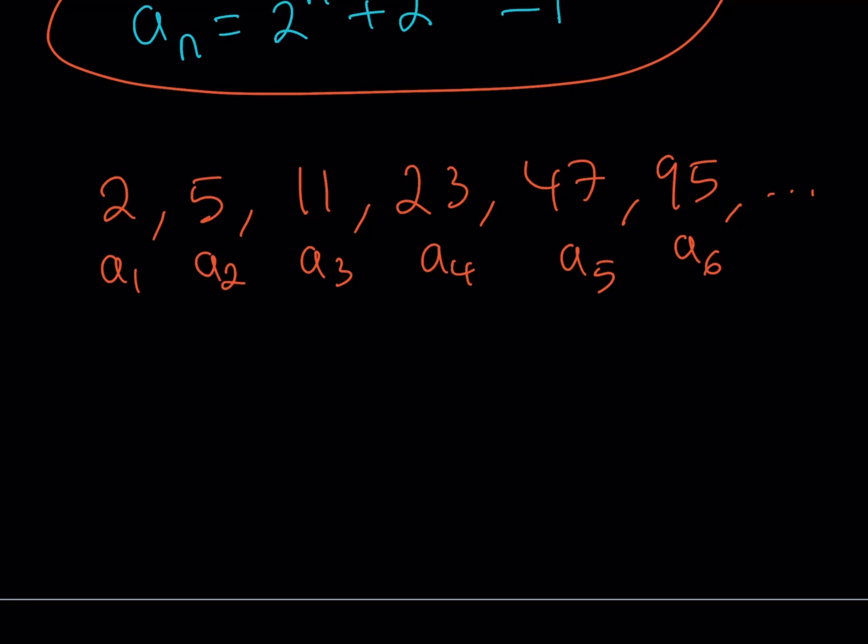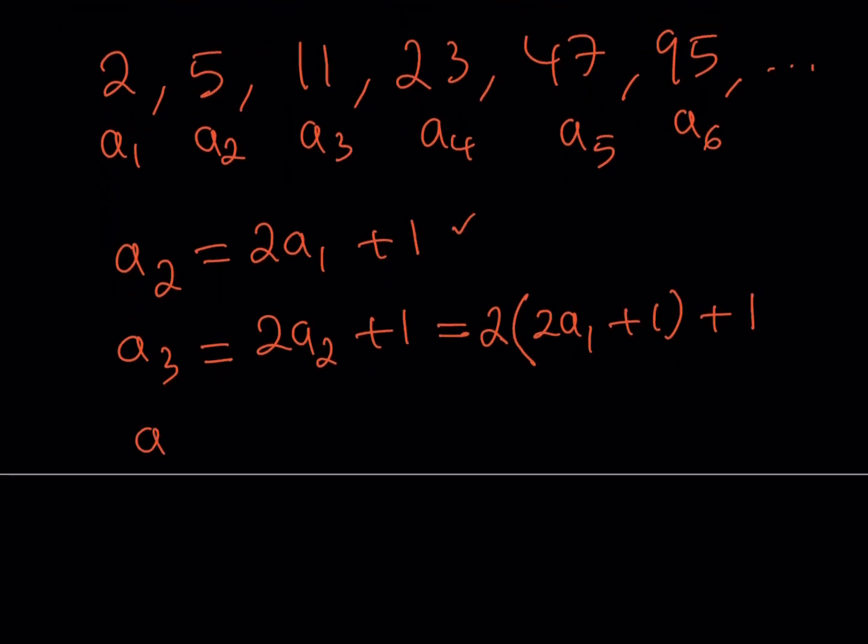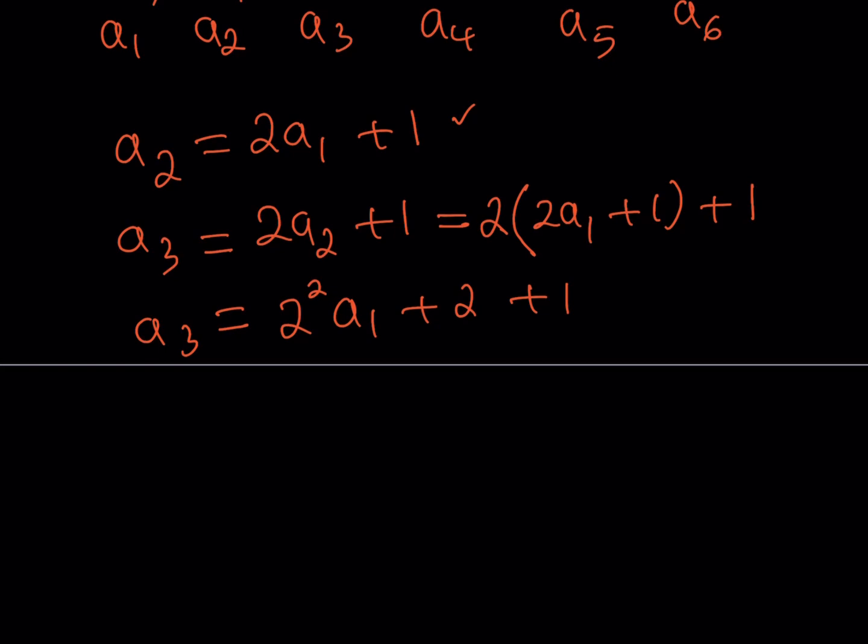My goal is to come up with this formula. Look at the relationship between A2 and A1. A2 can be written as 2 times A1 plus 1. A3 is equal to 2A2 plus 1. What I'm going to do is I'm going to replace the A2 with this one. So from here, A3 is going to give you 4A1, which you can write as 2 squared A1 plus 2 plus 1. I don't want you to add the 2 and the 1 and come up with 3 because we want to come up with a pattern.